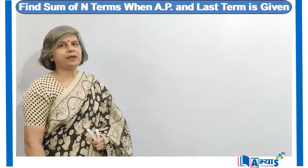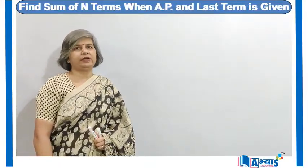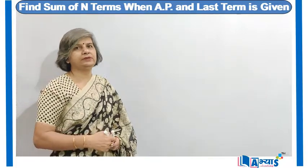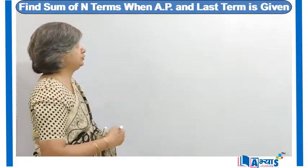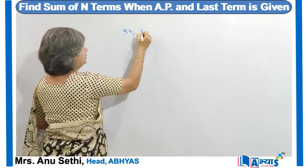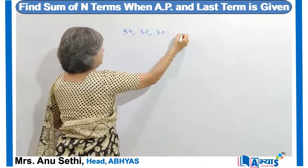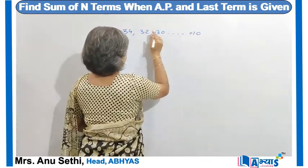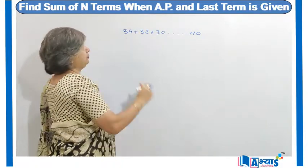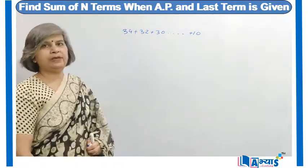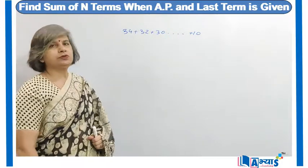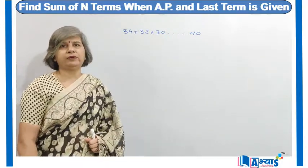Now let us apply the concept of finding the sum of n terms when the AP is given to us and the last term is given to us. Suppose we are given the AP as 34, 32, 30 and the last term is 10, and we are supposed to find the sum of these terms. The AP has been given to us and the last term has been given to us, and we are supposed to find the sum of n terms.